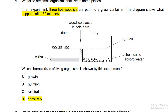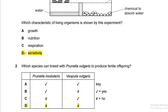If you re-read the question, the wood lice were originally placed in the center and then moved towards the damp side. The question emphasizes that one side is damp and the other is dry, so of course they are responding to changes in the environment — that is sensitivity. Nutrition definitely doesn't apply as they are not consuming anything. Growth definitely not either. So the answer is D, sensitivity.